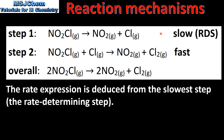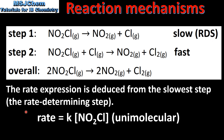As you can see from the reaction mechanism, step 1 is the slower step, therefore it's the rate determining step. Here we have the rate expression. Because there's one reactant particle in the rate determining step, the reaction is unimolecular.